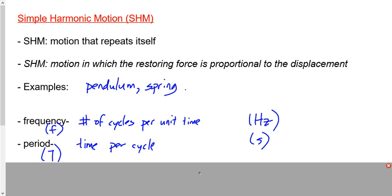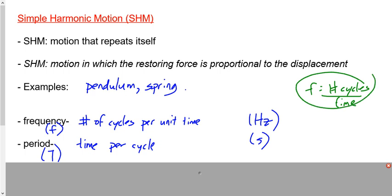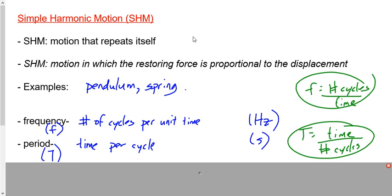We're doing this now in the context of repetitive motion — motion that repeats itself, back and forth motion. The equations are still the same. We can find frequency by dividing the number of cycles by time, or we can find period by dividing time by the number of cycles. Those aren't on our data sheet, but T equals 1 over f is on our data sheet, exactly the same as in the last unit.